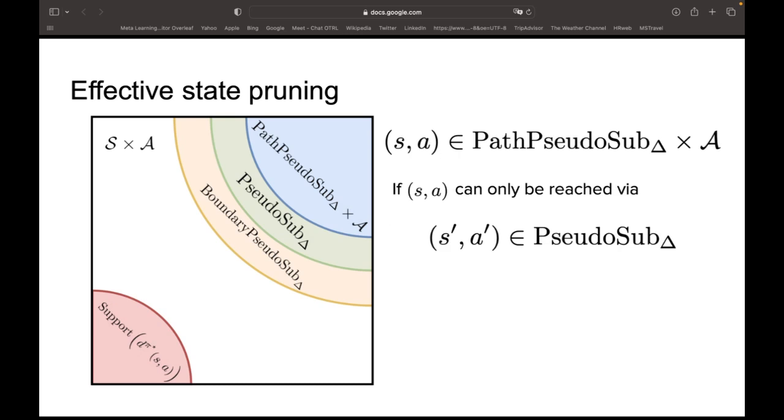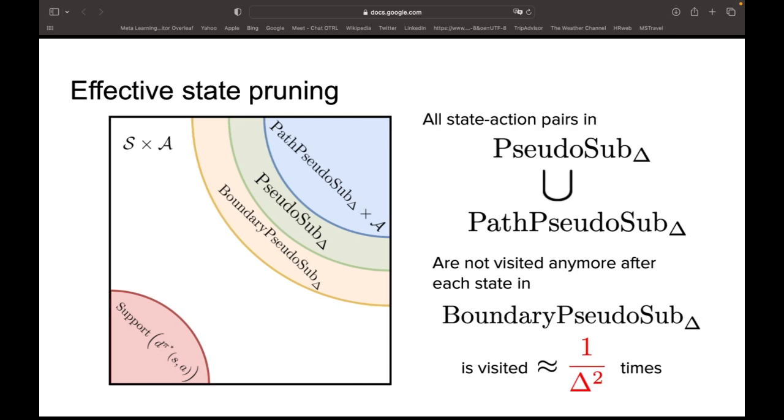The optimism of the UCBBI Shaped Q functions ensures any suboptimal state-action pair in pseudo-subdelta is at most visited approximately one over delta squared times. States in the boundary pseudo-subdelta, which is the yellow region, are those state-action pairs in pseudo-sub, the yellow and the green regions, that need to be traversed to reach all state-action pairs in pseudo-sub. And finally, states in path pseudo-subdelta are those that can only be reached by visiting a state-action pair in pseudo-subdelta. By definition, and as the diagram indicates, path pseudo-subdelta state-action pairs can only be accessed through boundary pseudo-substates. Combining these observations, we can conclude that all state-action pairs in pseudo-subdelta and path pseudo-subdelta will not be visited anymore after each state in boundary pseudo-subdelta is visited roughly one over delta squared times. This is why the state dependence of our final bounds will scale with a term that will depend on S minus at least path pseudo-subdelta.